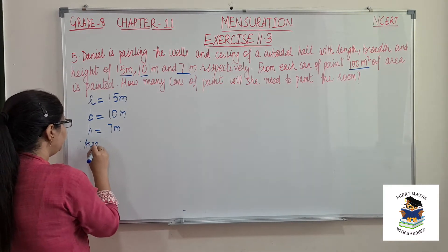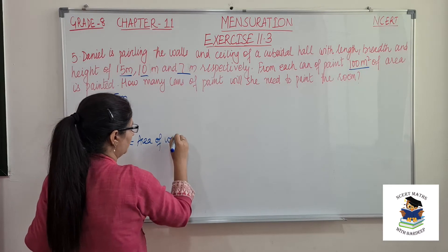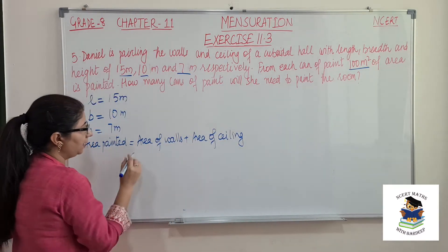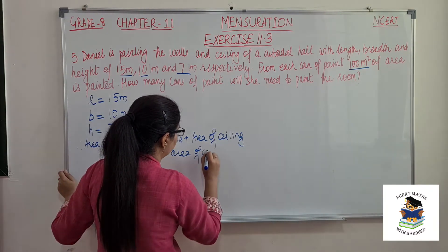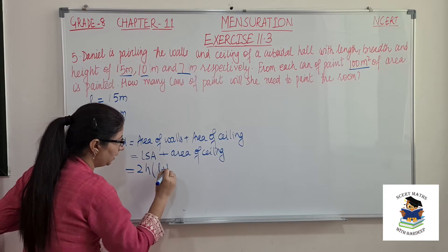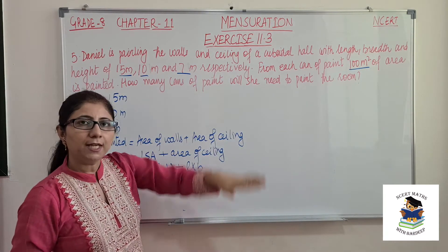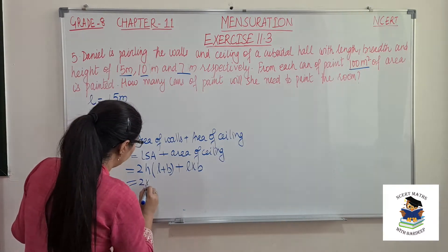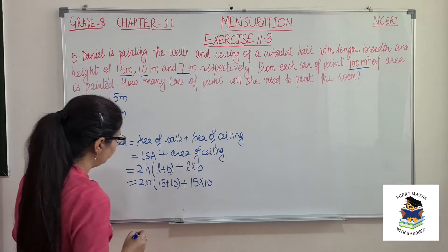She is painting the walls as well as the ceiling. For walls we need the lateral surface area, and for the ceiling this is L into B. Length is 15 meter, width is 10 meter, height is 7 meter. Area painted equals area of walls plus area of ceiling, which is lateral surface area plus L into B. Lateral surface area of a cuboid is 2H times (L + B), and area of ceiling is L into B. Putting values: 2×7×(15 + 10) plus 15×10.